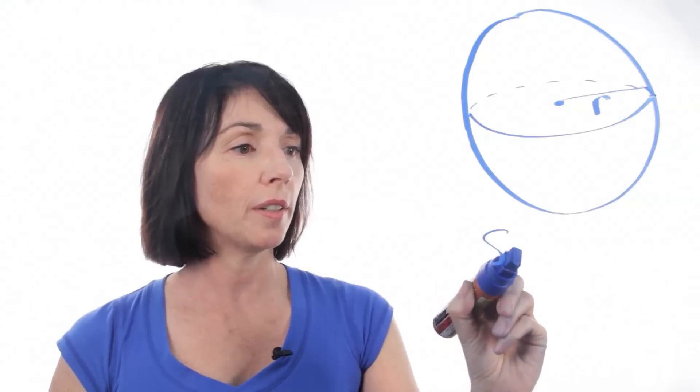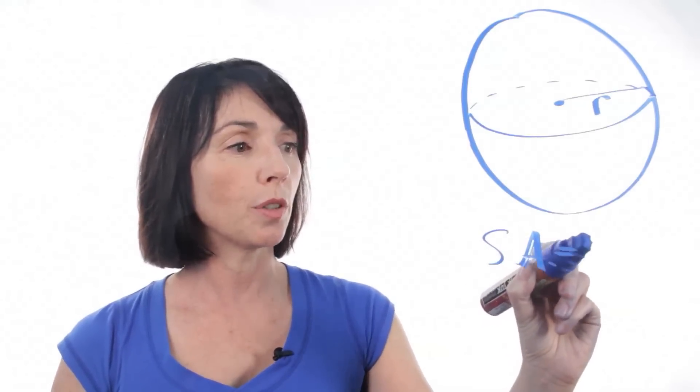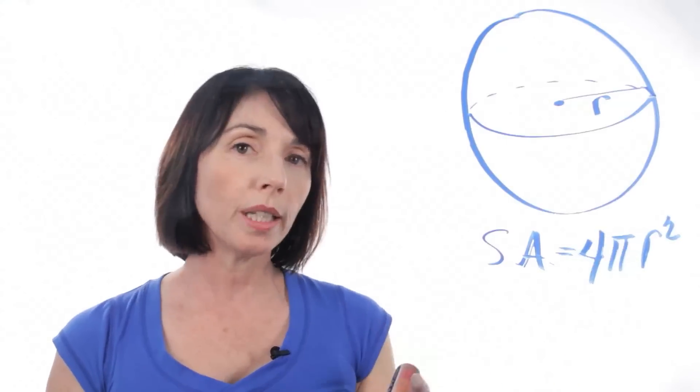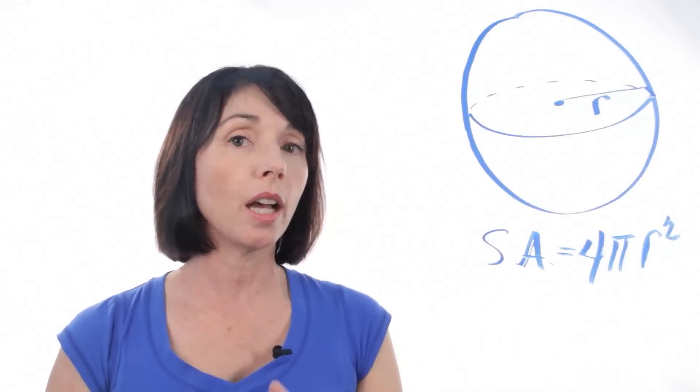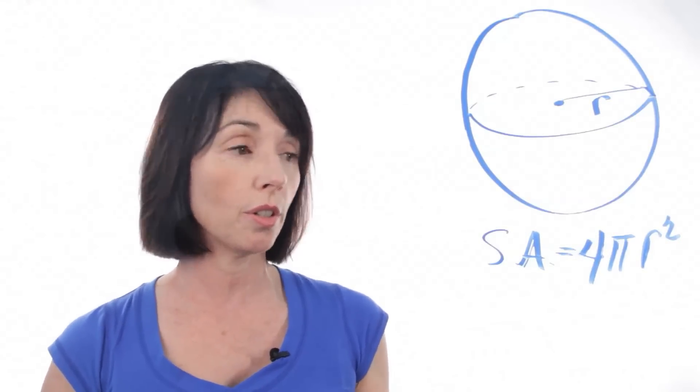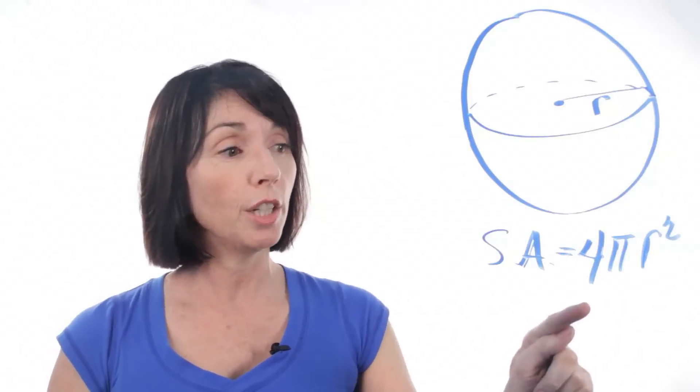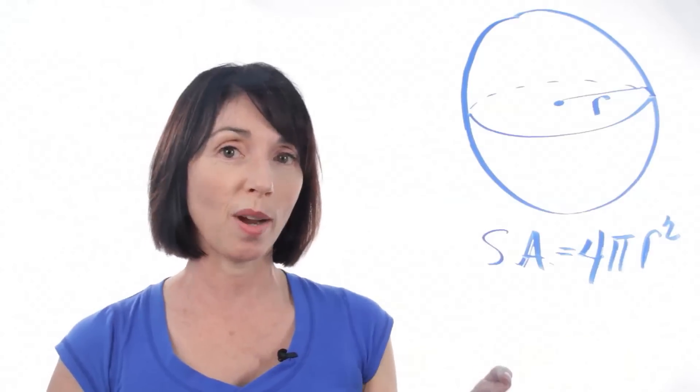So the surface area of a sphere is equal to 4 pi r squared. It's pretty easy to remember because the area of a circle, just a plain two-dimensional circle, is pi r squared. So to find the surface area of a three-dimensional sphere, you just take 4 pi r squared.